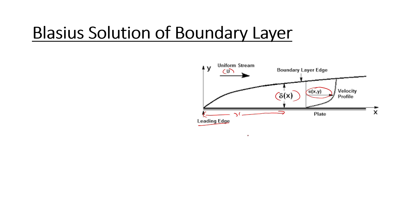Blasius found the solution for the thickness of the boundary layer: delta(x) is given by 5x divided by the square root of Re_x. Re is the Reynolds number, calculated at that point, equal to rho times u_infinity times x divided by mu. Here x is the distance from the leading edge up to the point where you need to find the boundary layer thickness. U_infinity is the free stream velocity, mu is the viscosity, and rho is the density of the fluid. This is the Blasius solution for the boundary layer thickness.